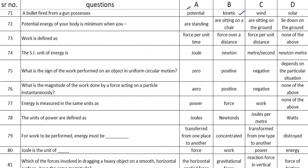any energy. The next question is: the potential energy of your body is minimum when you blank — and the answer is option D — lie down on the ground. The next one is: work is defined as a blank — and the answer is option B — force over a distance.